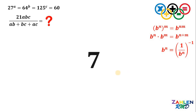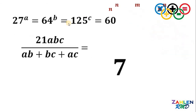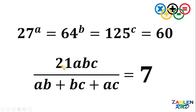Therefore, if 27 raised to A equals 64 raised to B equals 125 raised to C equals 60, then the value of 21ABC all over AB plus BC plus AC must be 7. And as always, we are done.